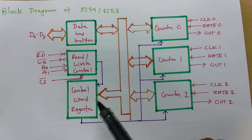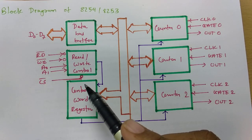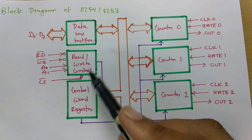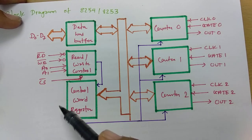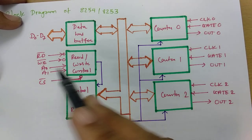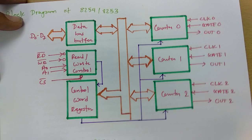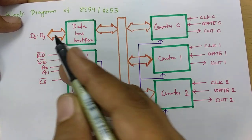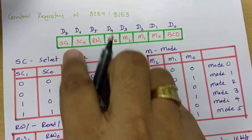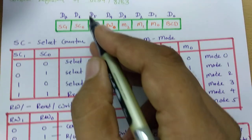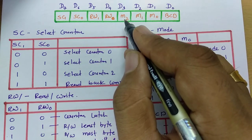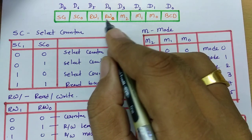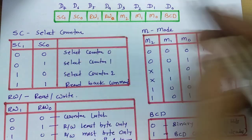To define the total number of count, we need to select the Control Register, which is selected when A0 and A1 equal 11. With the control register selected, data D0 to D7 can be placed to assign control register values. The control register bits from D0 to D7 are: BCD, M0, M1, M2, RW0, RW1, SC0, SC1.